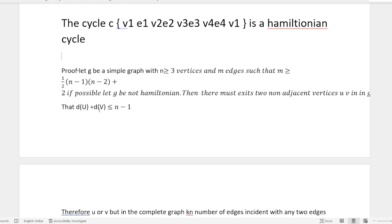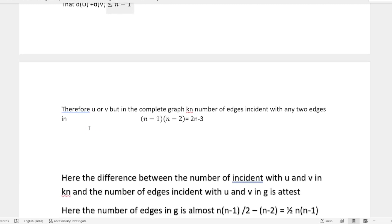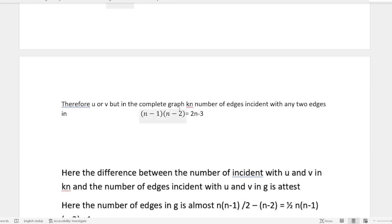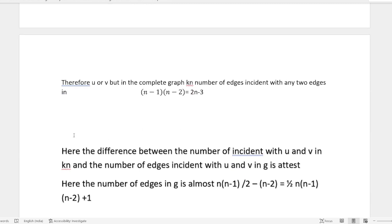That d(u) + d(v) ≤ n - 1. But in the complete graph Kn, the number of edges incident with any two vertices is (n-1)(n-2)/2 = n-3.